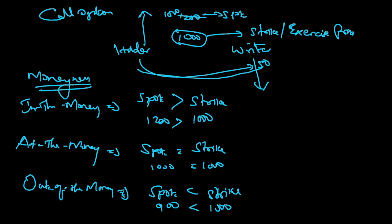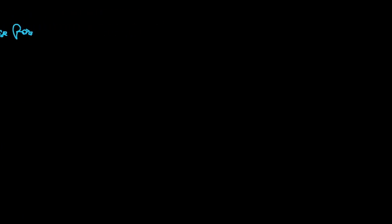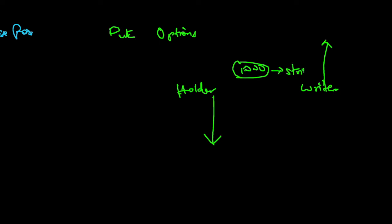However, for put option, it will be the other way round. For put options, imagine there is your holder and your writer. In put option, holder expects the price to come down, writer expects it to go up. Imagine 1000 is the strike price and holder has paid premium of 50.